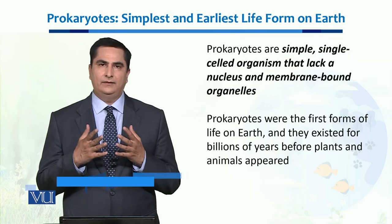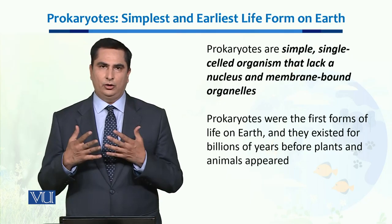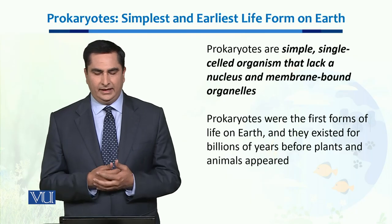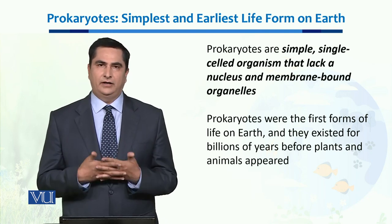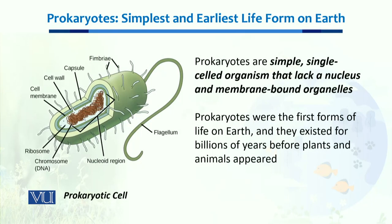Three to four billion years ago they were the first organisms that appeared on this planet earth, and they have existed for billions of years. Bacteria is one fine example of these prokaryotes. Their structure is so simple — they don't have a well-defined nucleus; rather their chromosome or DNA directly resides inside their cytoplasm. This gives them a simpler structure and, to some extent, advantages to better adapt over the course of billions of years.